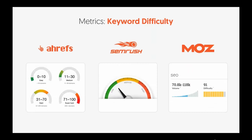If Ahrefs shows something is medium to hard to go after, SEMrush shows the same thing, and Moz does as well, the chances are that keyword is going to be difficult. A lot of these tools have free versions — SEMrush has a free version, Moz has a free version. If you put in keywords and all three say it's easy, it's usually a good keyword to go after assuming there's decent volume. If they all say it's hard, you may want to think again.